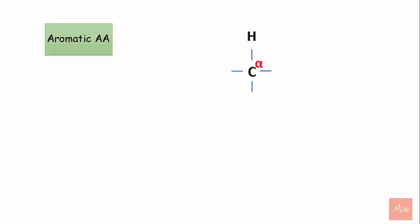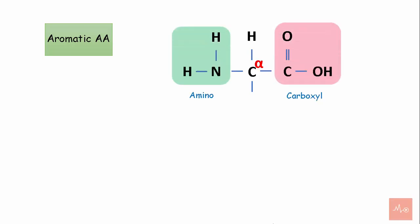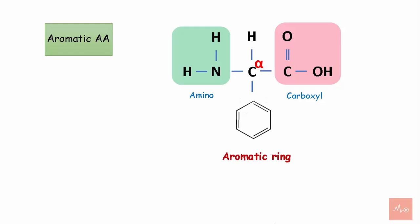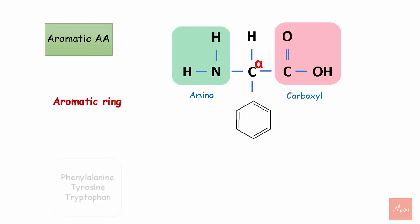Aromatic amino acids contain a carbon skeleton, one amino group, one carboxyl group, and a side chain which is an aromatic ring. Examples of aromatic amino acids are phenylalanine, tyrosine, and tryptophan.